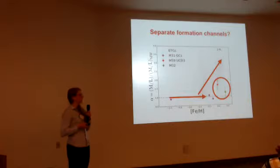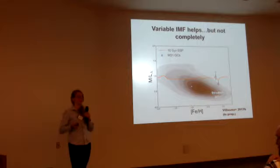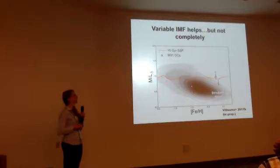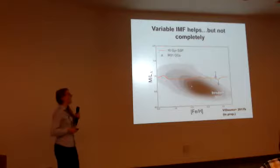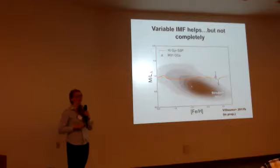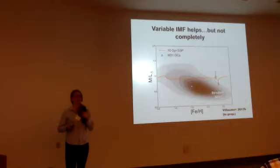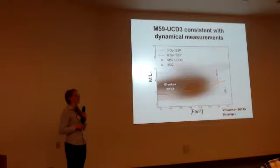We can go back to the dynamics and see to what extent a variable IMF can help explain the dynamical properties. Here I'm again showing the dynamical mass-to-light measurements for M31, this time with the stellar mass-to-light measurements I've made. A variable IMF helps, but not completely — there's still tension at the high metallicity end. Simple estimates show you'd actually need a pretty extreme IMF to explain the lowest dynamical mass-to-light ratios at the highest metallicity. However, M59-UCD3 is very nicely consistent with the dynamical measurements.